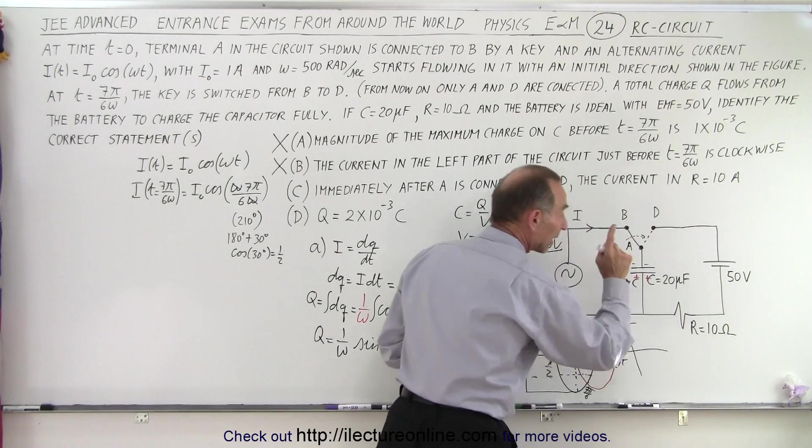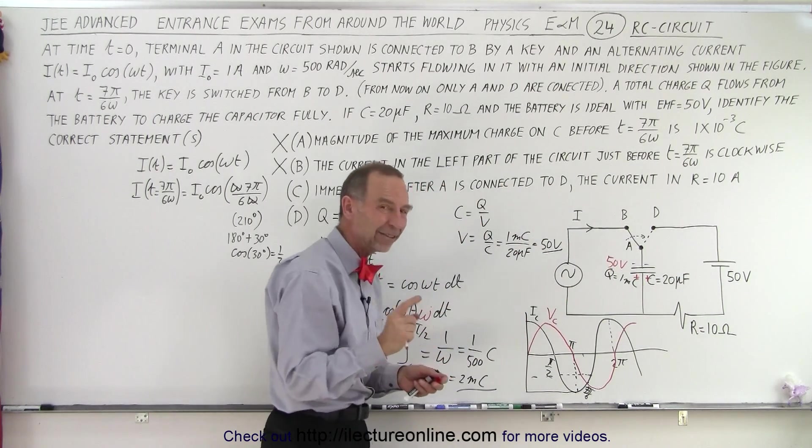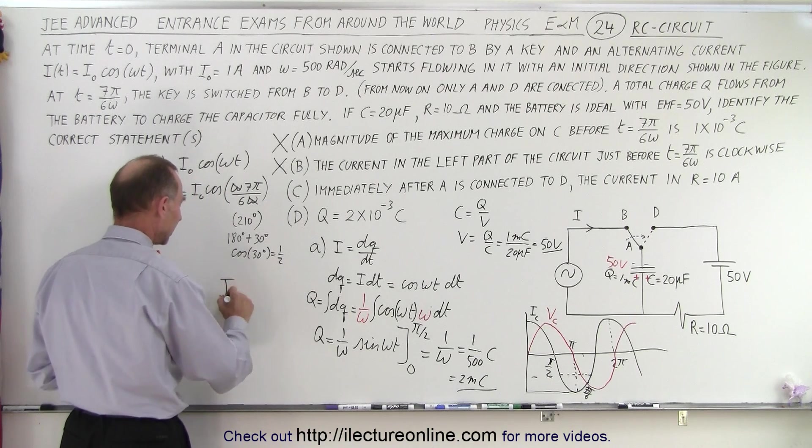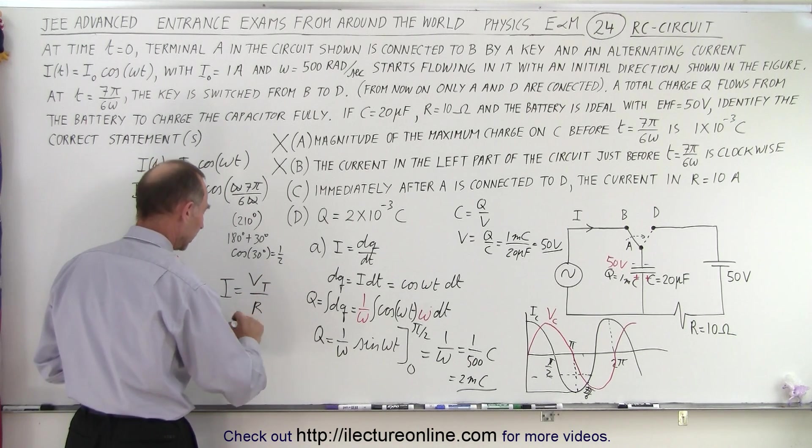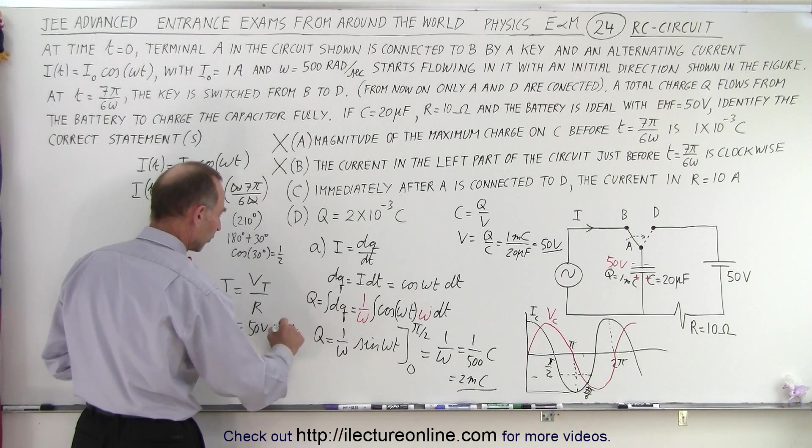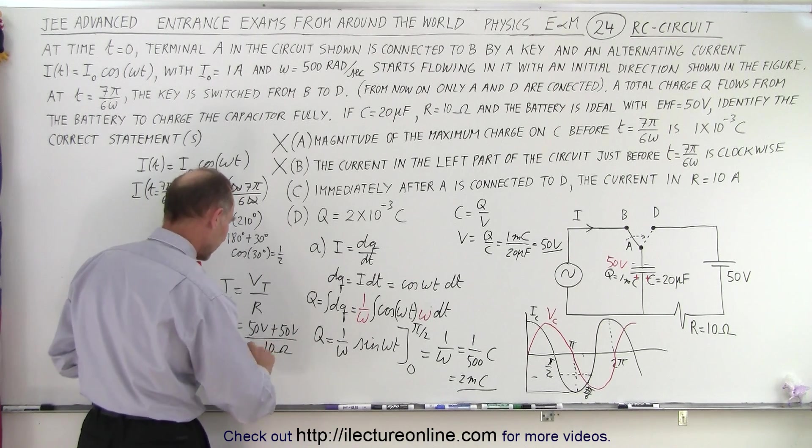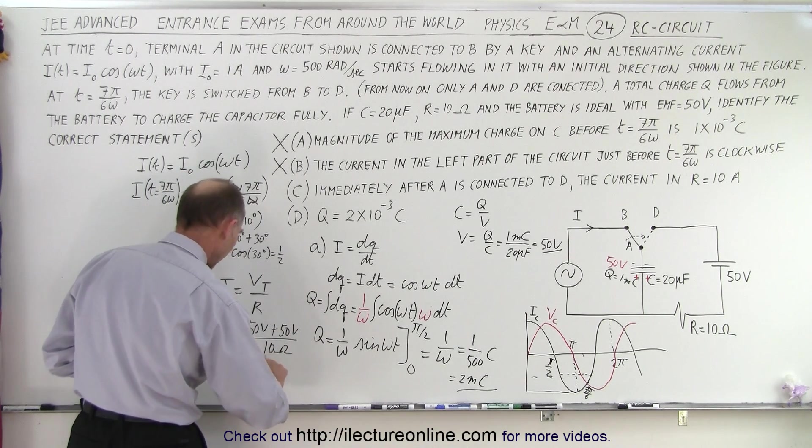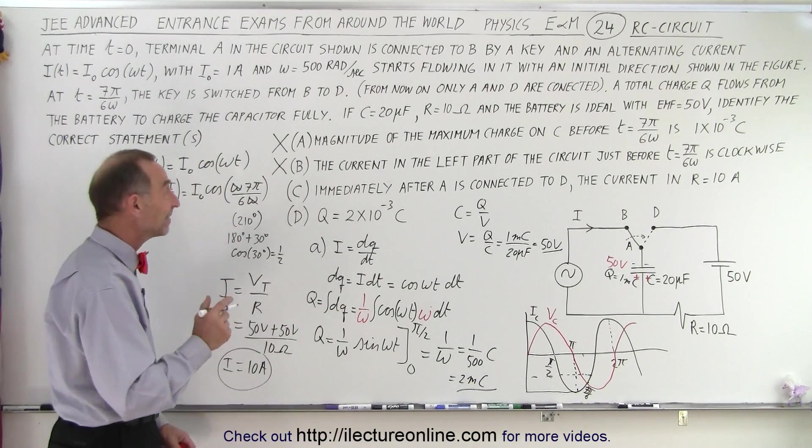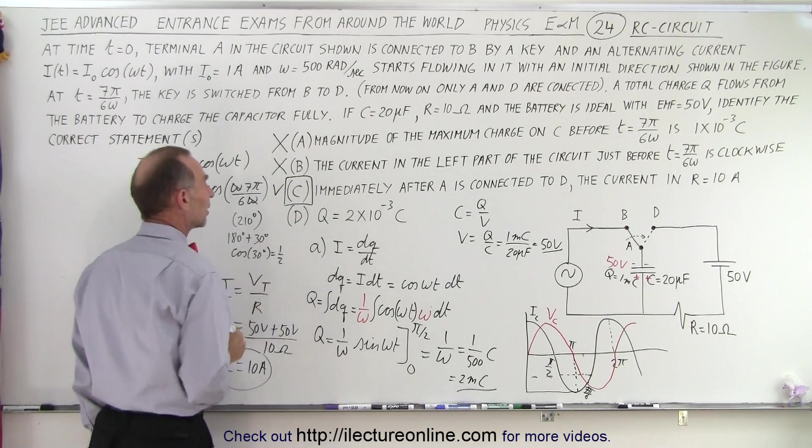So the total voltage at that moment in time when we flip the switch, the total voltage in the circuit is 100 volts. And so then if we use Ohm's law, we can say that I is equal to V total over R. In this case, it would be 50 volts on the battery plus 50 volts on the capacitor divided by 10 ohms. So you can see that's 100 divided by 10, or 10 amps, and it turns out at that very moment when we flip the switch, the current indeed is 10 amps, which means C is correct, and that's one of the answers.